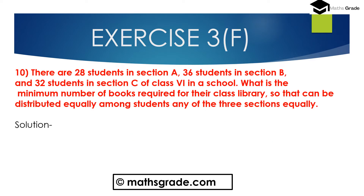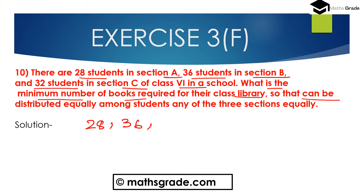Question number 10: There are 28 students in section A, 36 students in section B, and 32 students in section C of class 6 in a school. What is the minimum number of books required for the class library so that they can be distributed equally among students of any of the 3 sections? We have to find the LCM of 28, 36, and 32.